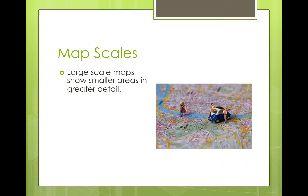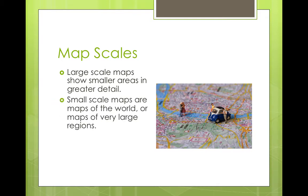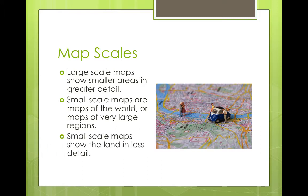Large scale maps show smaller areas in greater detail. Small scale maps are maps of the world or maps of very large regions, and they show the land in less detail.